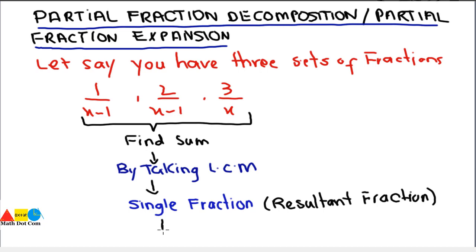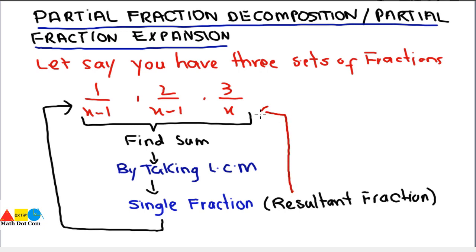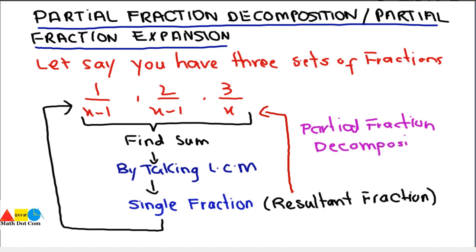But what if I want to convert this single fraction back into the three fractions of which it is made? What method should be used in order to get these individual fractions from this single resultant fraction? Here comes the idea of partial fraction decomposition. In order to convert this single fraction into the individual fractions, we have to use the method of partial fraction decomposition or partial fraction expansion. As its name indicates, we are decomposing a single fraction into multiple fractions.